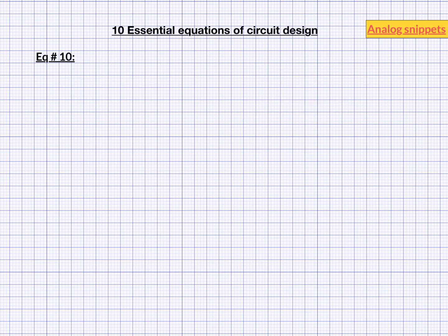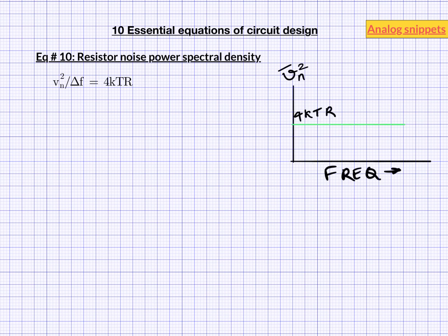Noise is an important consideration in many circuits and that is why noise spectral density of a resistor is our 10th and final equation. Noise power spectral density represents noise in 1 Hz bandwidth. All physical resistors generate noise which depends on the temperature and the resistor value. Noise of a resistor is known by some other names as well. It is known as thermal noise or Johnson noise or Nyquist noise. Note that this equation is frequency independent. So if we plot it with frequency we will get a horizontal straight line. And that is why this type of noise is also known as white noise.